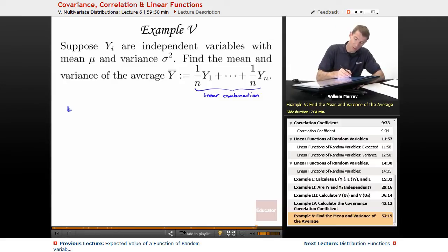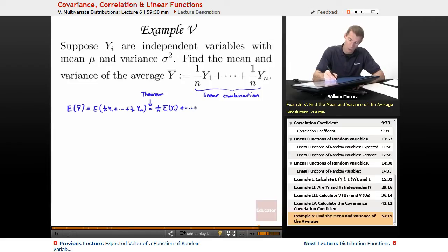The expected value is the same as the mean, remember. The expected value of y bar, the mean and variance of the average. So the expected value of y bar is just the expected value of 1 over n, y1, up to 1 over n, yn. And I can distribute by linearity of expectation. That was the theorem that we had. So I can distribute and pull out those coefficients, 1 over n times E of y1, up to 1 over n times E of yn.